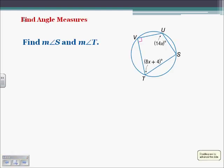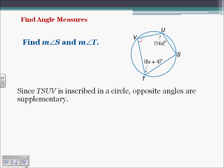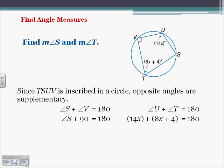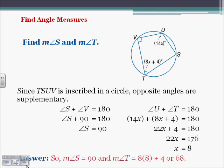We can use the Inscribed Quadrilateral Theorem to find angle measures. Since S and V are opposite angles, they must add up to 180. If angle V is 90, then angle S must also be 90. For U and T, we have 8x plus 4 plus 14x equals 180. Combining like terms: 22x plus 4 equals 180, so 22x equals 176, meaning x equals 8. Plugging in for angle T: 8 times 8 plus 4 equals 68.